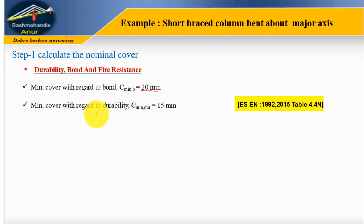Next, minimum cover with regard to durability. This can be calculated from Ethiopian Standard EN 1992, table 4.4 or Eurocode 2 table 4.4. Let's see what the Ethiopian Standard code says. The value is 15 mm defined initially.